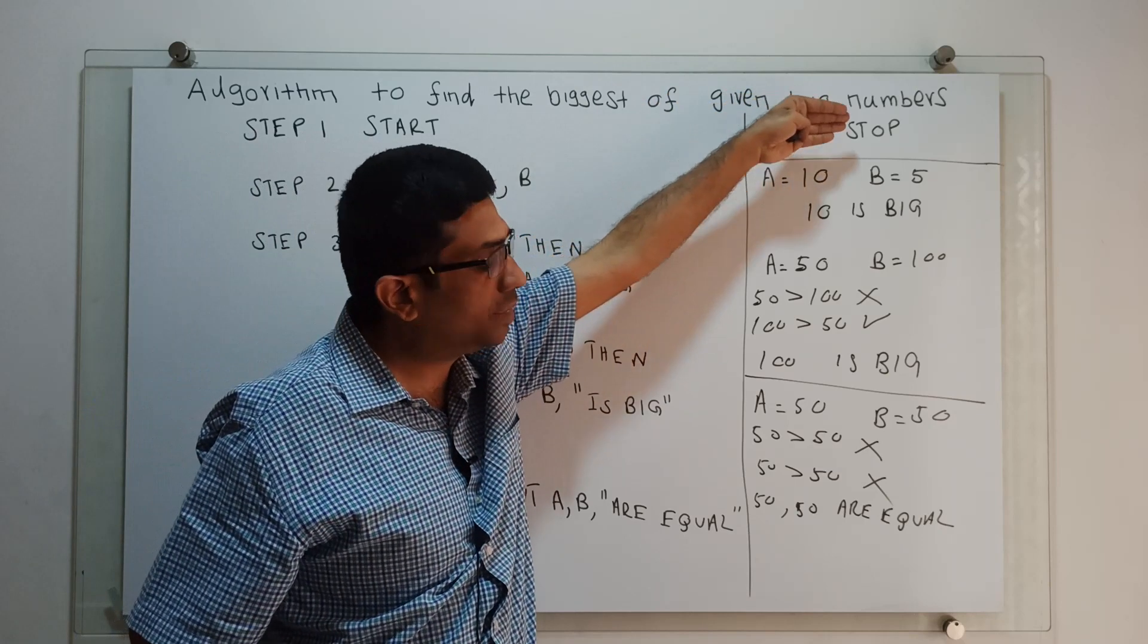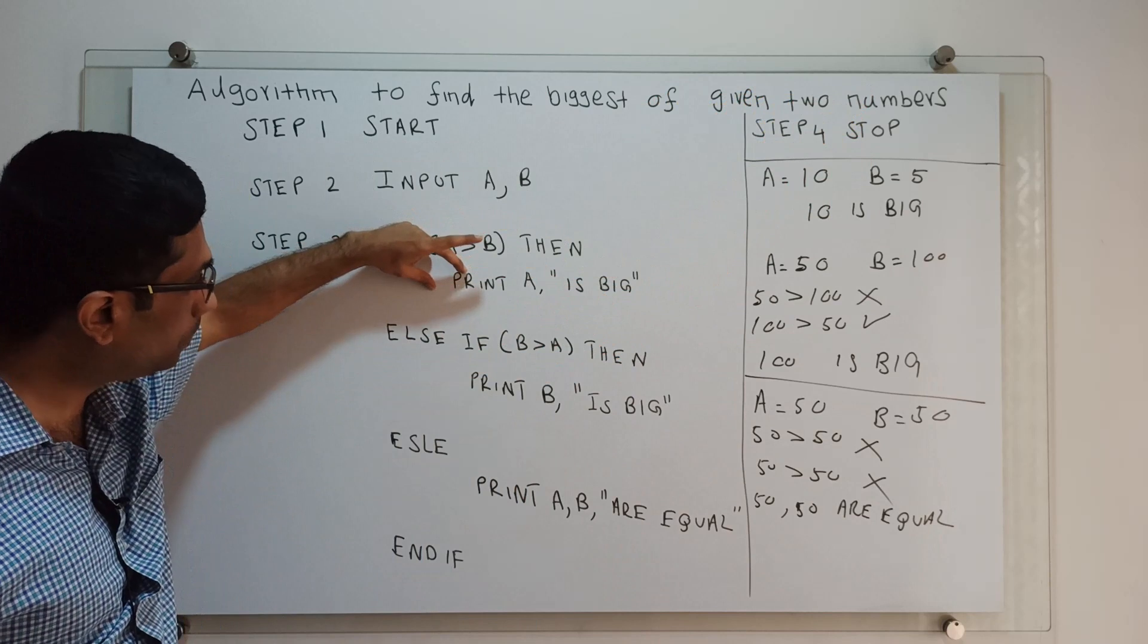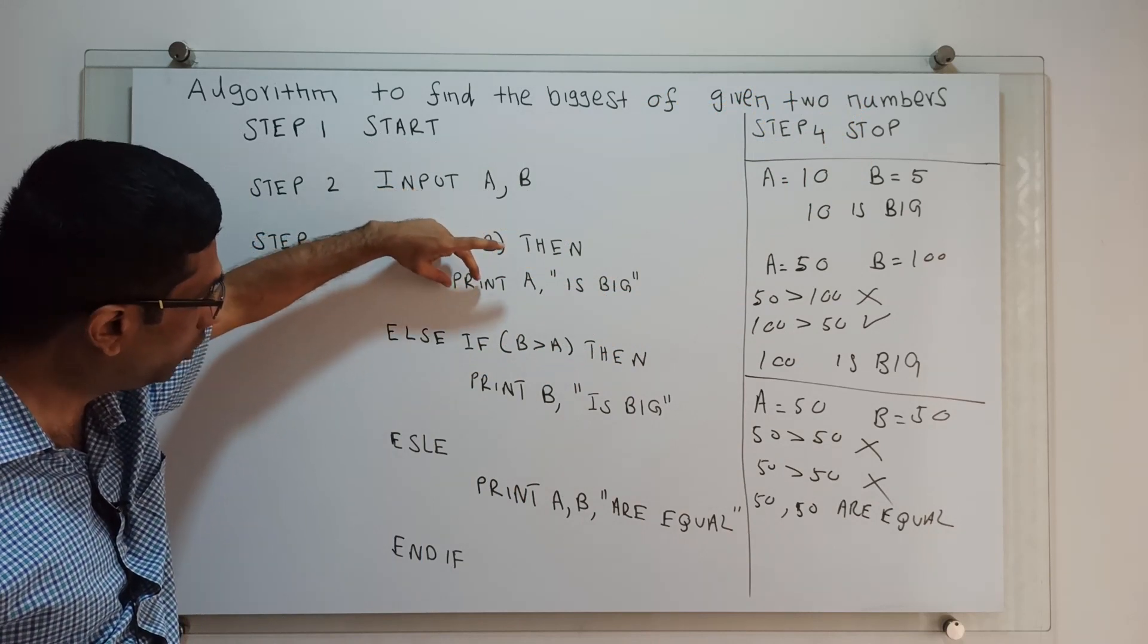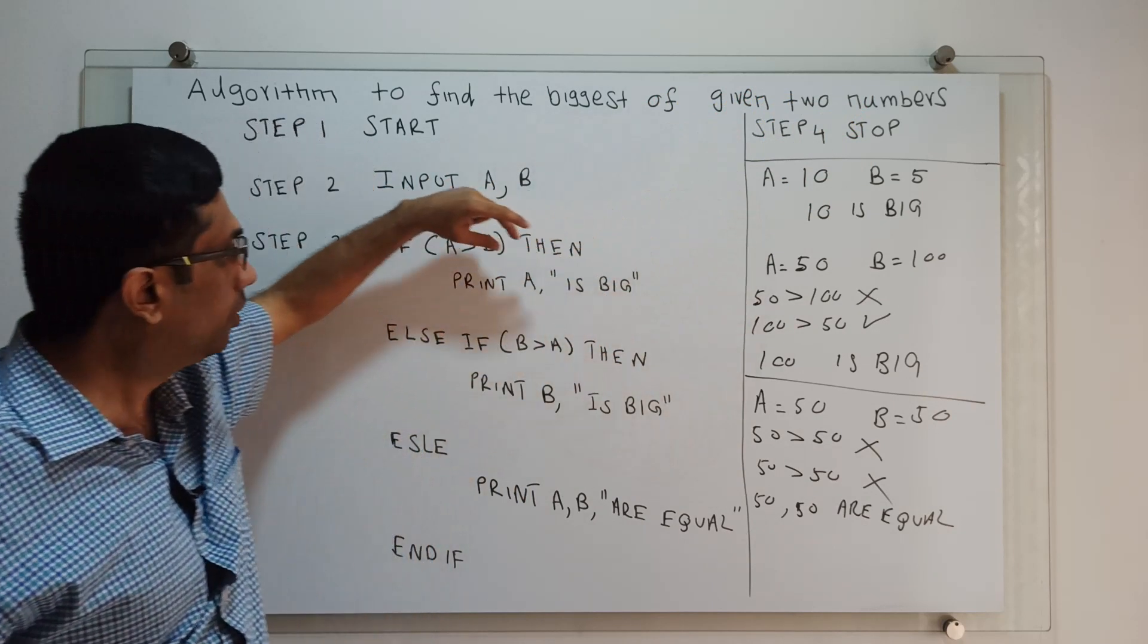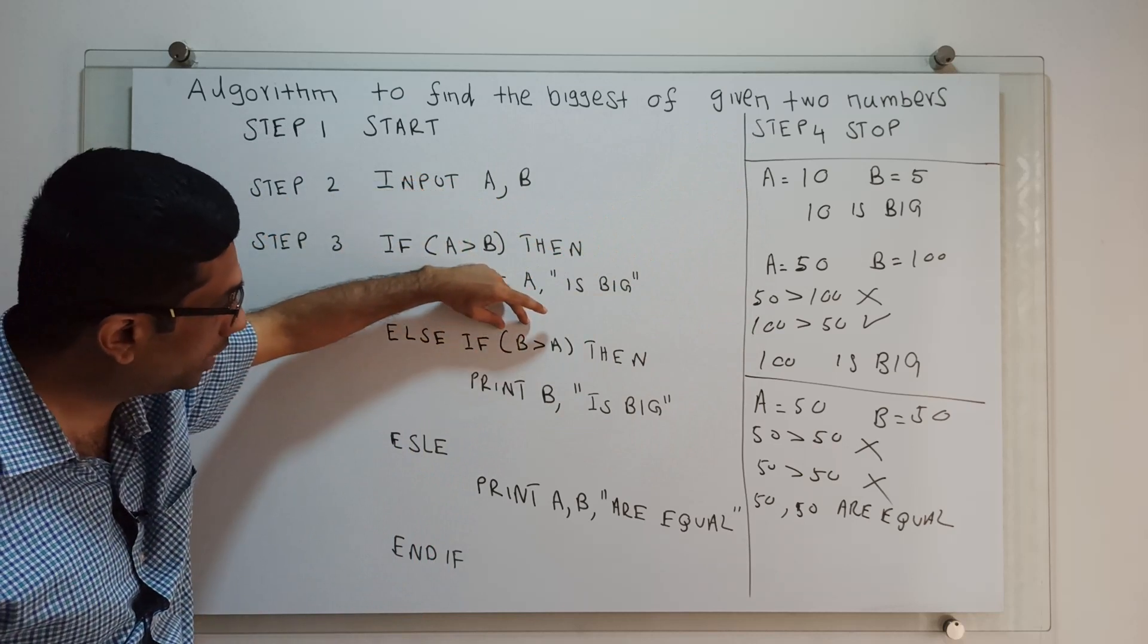If you have any other statement, we can come to that instead of stop. If the if-block is true, then the if condition is true, the block will execute, and the control will go to the next statement. If the block is false, it will come to the else-if block and check the condition.